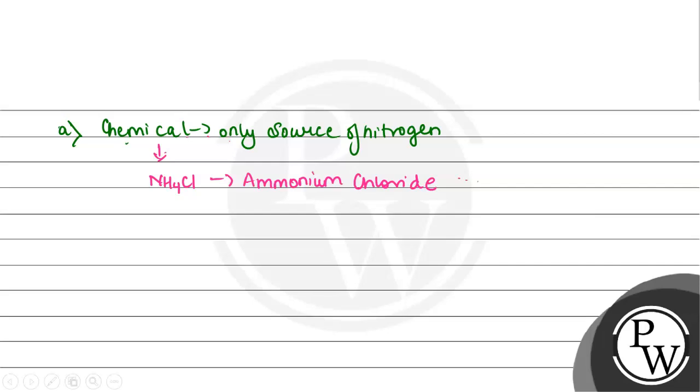So, next hameh baat kar leete hai, sabse pehle, ye part mein poucha hai, that chemical ka name batana hai, joki only source tha, given experiment meh nitrogen ka. So, the chemical used for nitrogen was NH4Cl. So, experiment meh NH4Cl use kiya tha, that is ammonium chloride, for the nitrogen and this mein se hameh different isotopes nikaale gaite hai, that is, which was labelled with heavy nitrogen 15N and for the light nitrogen, that is 14N.